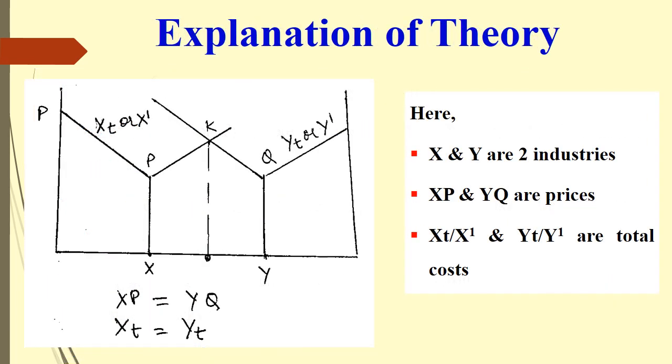Now let's discuss how Palander explained his theory. Here, X and Y are two industries located at different places. XP and YQ are the respective prices. XT and YT are the total costs of industry X and industry Y. These total costs include the price plus the transportation cost.